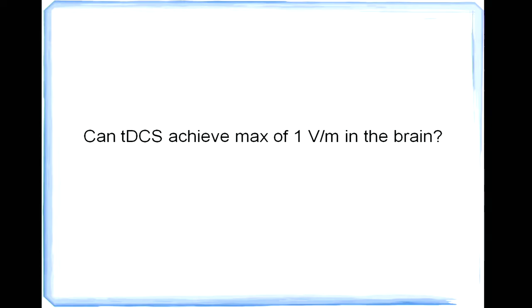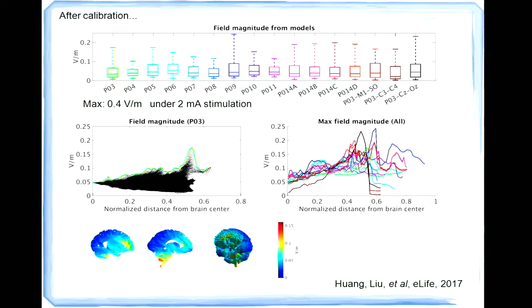And the second question we can answer using the recording data is can transcranial electrostimulation achieve one volt per meter in the brain as suggested by previous modeling studies? And the answer is simply no. Because after we calibrate the model using the recording data, we can plot the entire electric field magnitude distribution inside the head, inside the brain actually. And actually you can see from here that the maximum value that can be achieved is only 0.2 volt per meter under one milliampere stimulation, or 0.4 volt per meter under two milliampere stimulation. So this is basically fewer than half of the previous modeling studies suggested.